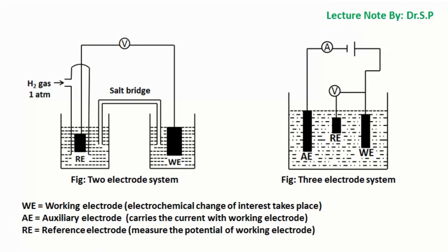In the two-electrode system, current passes between the working electrode and the reference electrode, so polarization of the reference electrode takes place. But in the three-electrode system, current flows between the working electrode and the auxiliary or counter electrode, so there is no polarization of the reference electrode.